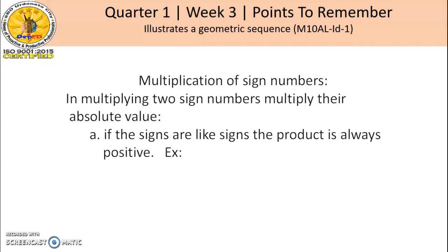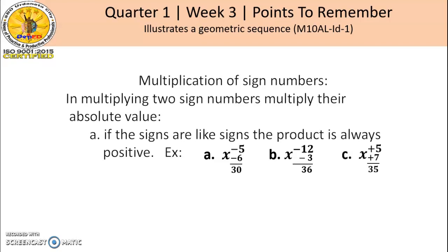Examples: For letter A, negative 5 times negative 6, the product is positive 30. Letter B, negative 12 times negative 3, the product is positive 36. Letter C, positive 5 times positive 7, the product is positive 35.